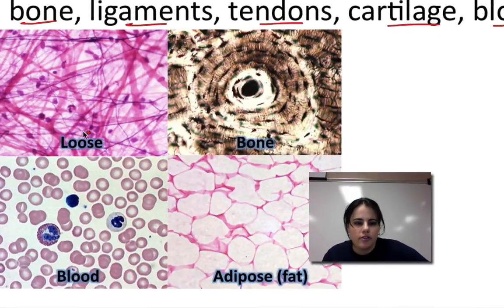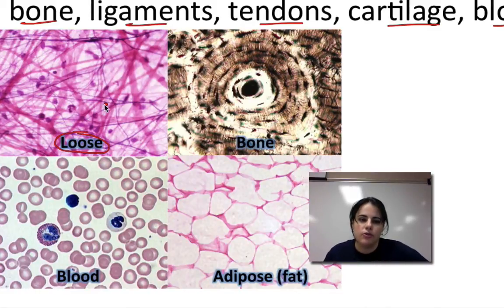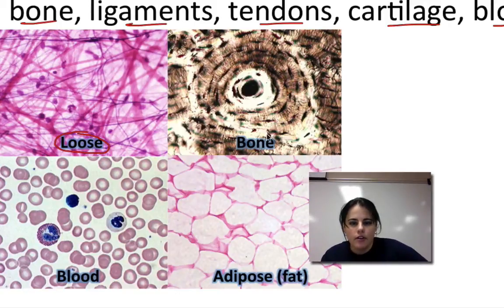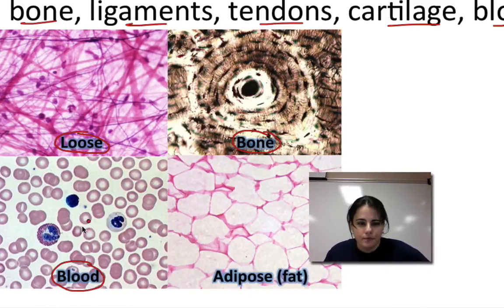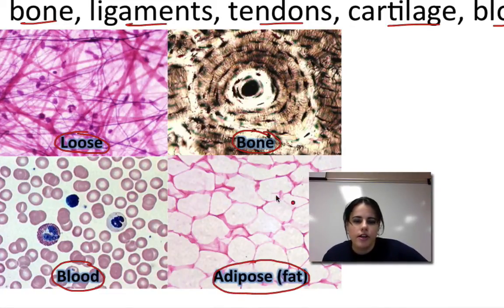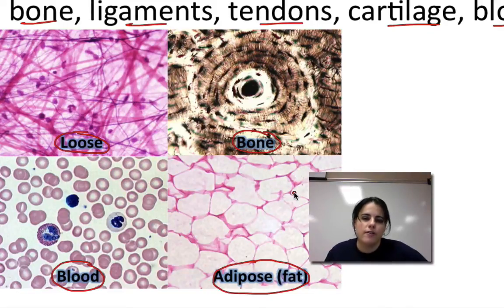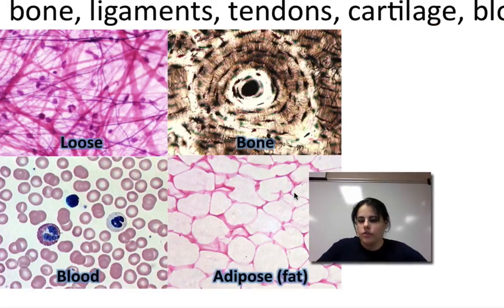This is an example of loose connective tissue — there's a lot of space between the fibers and it looks like a bunch of spider webs. It binds body parts together. Over here, this is what bone looks like — it's very unique because it looks like a tree stump with concentric circles going around. That's bone tissue. And then we have blood, which has different types of cells in it. And then we have adipose — fat tissue that looks like big hollow empty things, but that's actually where fat is stored inside of them.